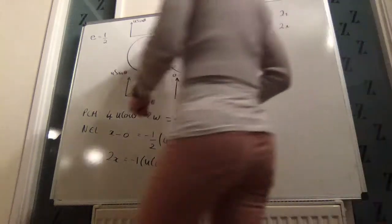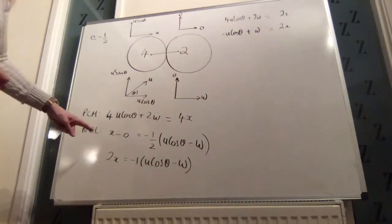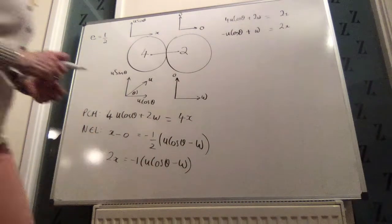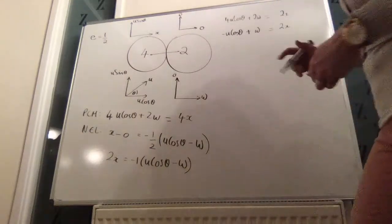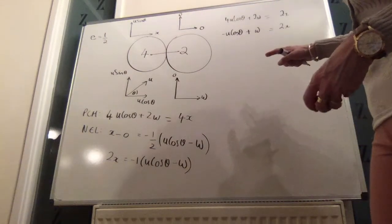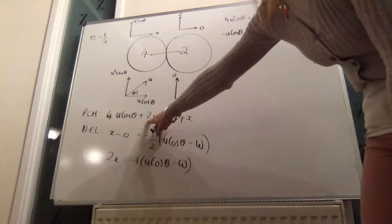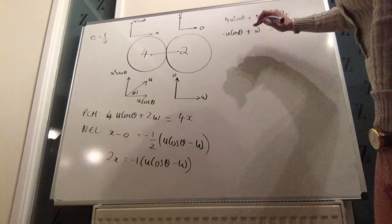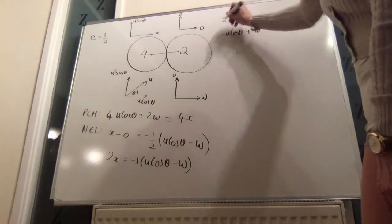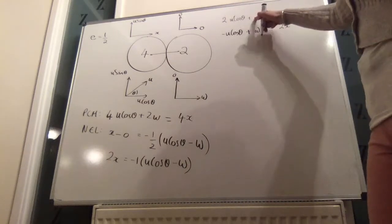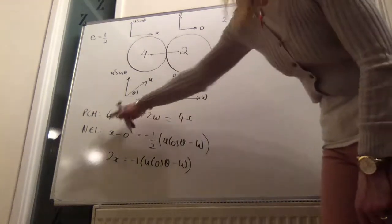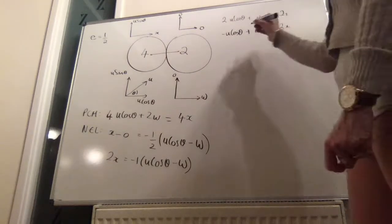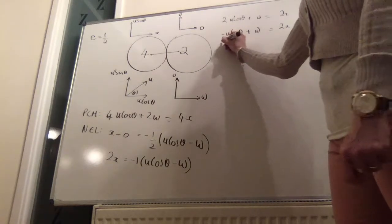Oh, hang on. Sorry. I have a mistake here because I divided by 2. So, that should be a 2. That should be 1w and that should be 2. Sorry, that was my mistake. I divided by 2 here before I put it up here. So, now we have two equations.